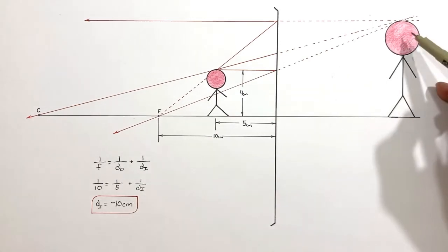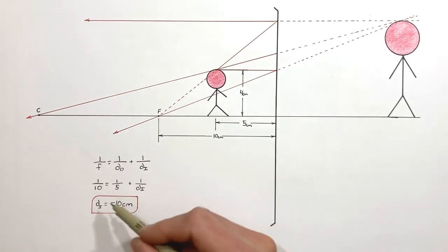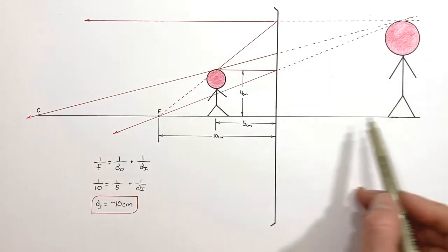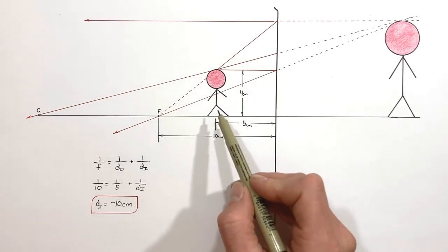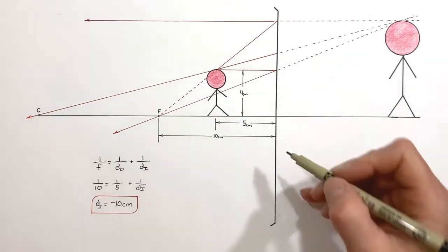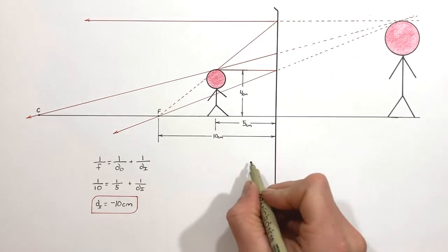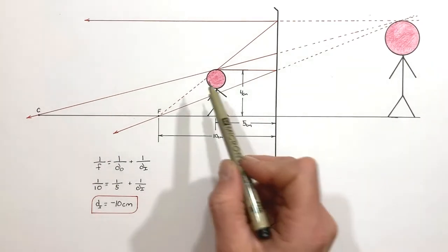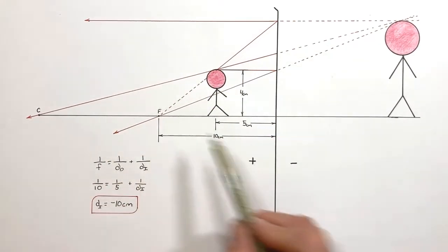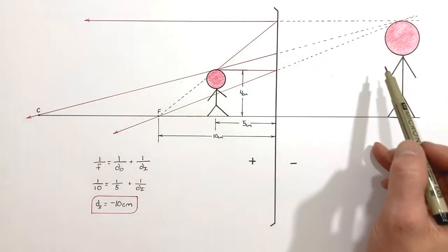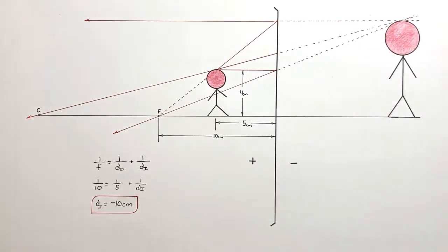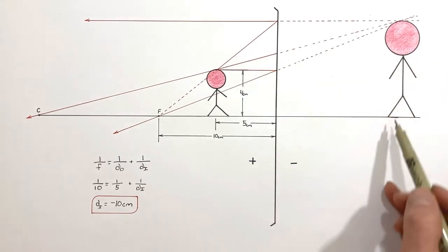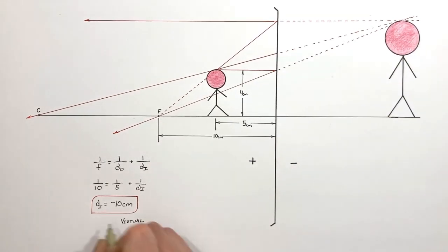The 10 centimeters simply tells us that our image forms 10 centimeters from the mirror, and this negative is a pretty big deal — it tells us that the image is on the opposite side of the mirror from the object. You can think of a mirror as having a positive and a negative side: the positive side being where the object and light actually are, and the negative side being what we call the virtual side. So negative 10 centimeters tells us we have a virtual image sitting behind the mirror.